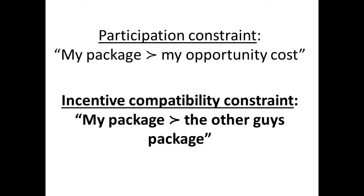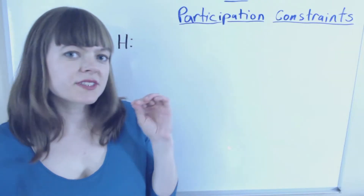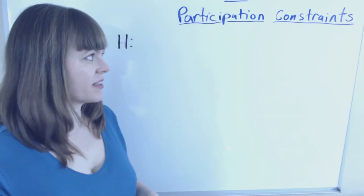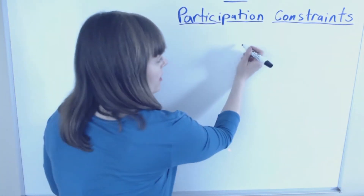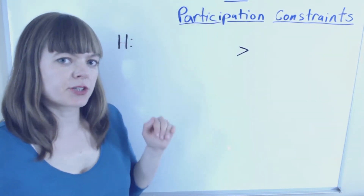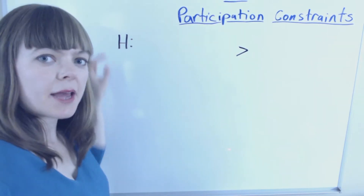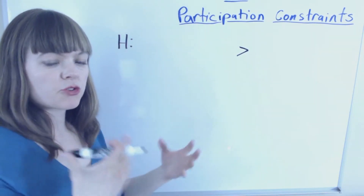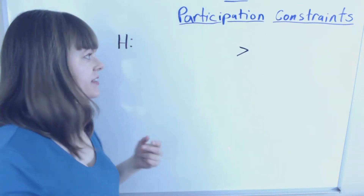The incentive compatibility constraint has a different interpretation. This constraint says that each type of person prefers to take their own package as opposed to taking the package that was designed for the other type. So we're setting up inequalities from the two different players' perspectives — the high type and the low type — and trying to incentivize both into their respective packages.